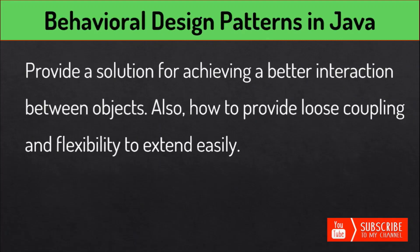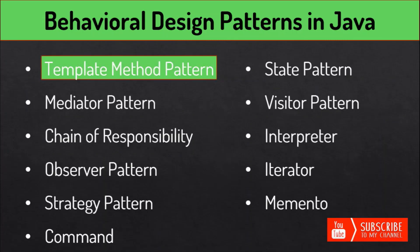Last are the behavioral design patterns. They provide solutions for achieving better interaction between objects, tell how to provide loose coupling and flexibility to extend easily, and deal with the behavior and interaction between objects. Under behavioral patterns, the Template Method design pattern creates a method stub and defers some of the steps to the implementation of subclasses — it defines the steps to execute an algorithm and provides a default implementation common to all or some subclasses.